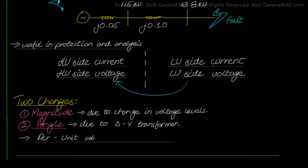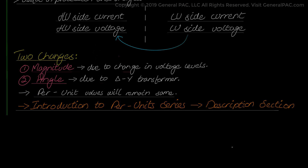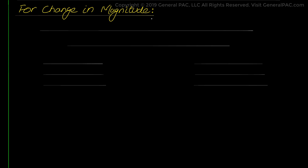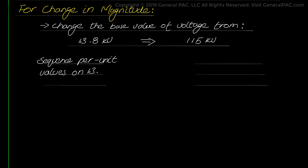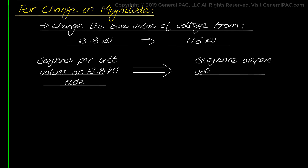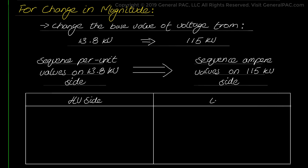Per unit values of sequence voltage and current quantities will remain the same — this is one of the benefits of the per unit system, which we viewed in the introduction to per unit series by GeneralPAC. To account for the change in magnitude as a result of analyzing the fault on the high voltage side of the transformer, we simply change the base value of the voltage from 13.8 kV to 115 kV. This allows us to convert the sequence per unit values of currents calculated earlier to the sequence ampere values reflected on the 115 kV side. The table below summarizes the changes in magnitude concepts.